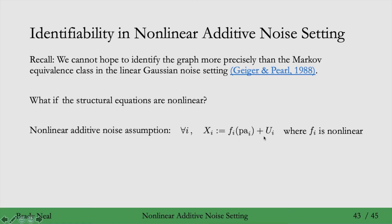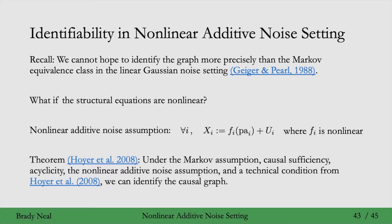Under this assumption, and under the Markov assumption, the causal sufficiency assumption, acyclicity, and this nonlinear additive noise assumption — as mentioned — plus a technical condition from the paper where this comes from, we can identify the causal graph. So we don't just get the Markov equivalence class; we get the precise single graph. It's only the correct graph under this nonlinear additive noise assumption and the technical condition from their paper.